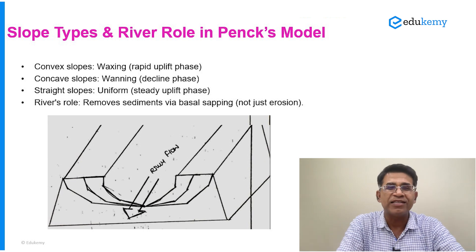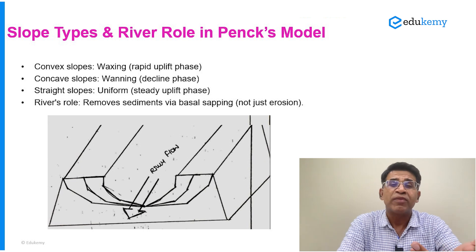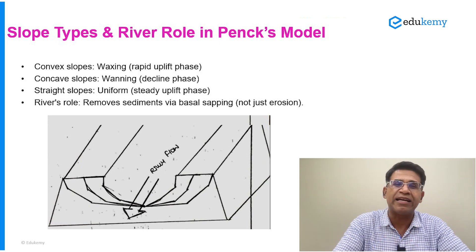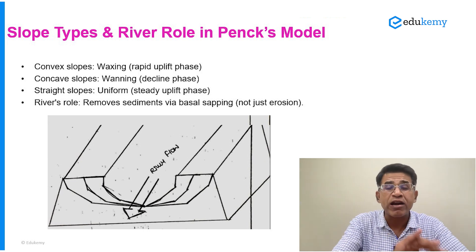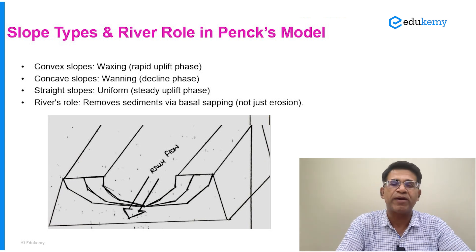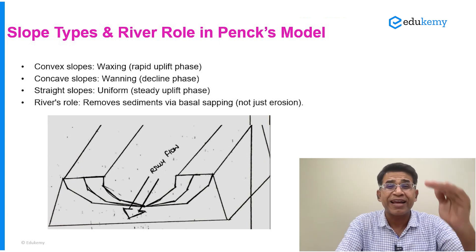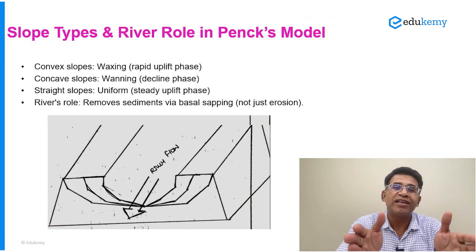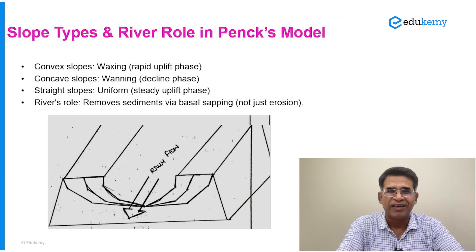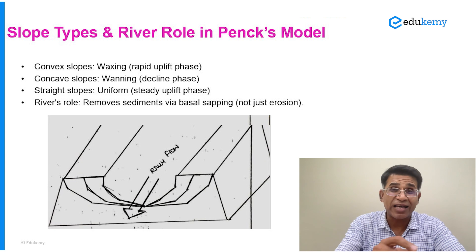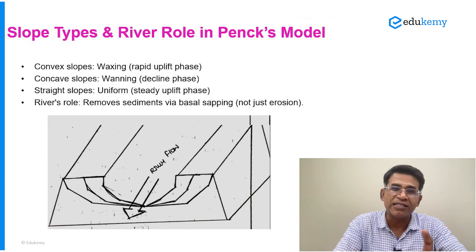Peng, however, says convex slopes are features of the growing or waxing stage — when the landform is uplifting rapidly or acceleratingly. Concave slopes are features of the waning phase, when the landform is gradually reducing its absolute and relative height. Straight slopes are features of the phase of constant growth, which is the phase of constant development. That is how Peng explains slope types.